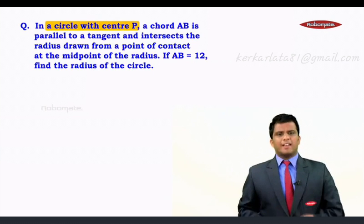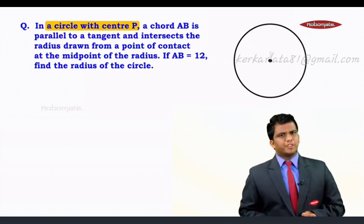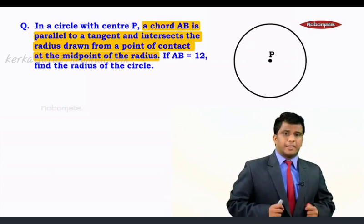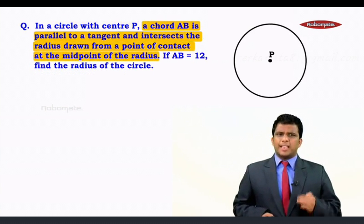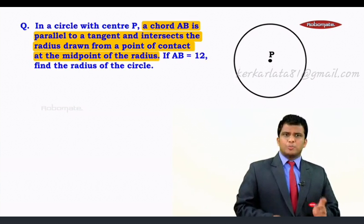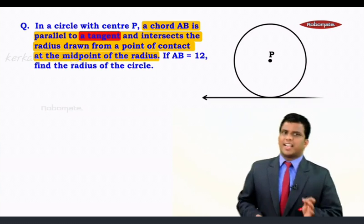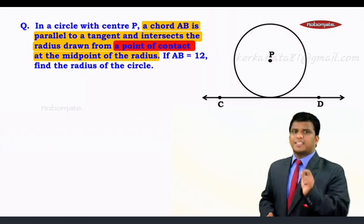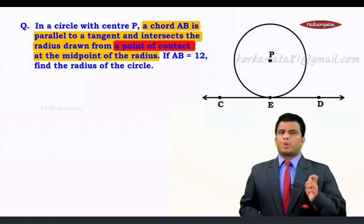Now we need to have a circle with center P for sure. And here we need to have a special segment which is the chord and whose name is AB. But this chord AB has got certain prerequisites. The chord AB has to be parallel to the tangent. So let's have a tangent here. Line CD is a tangent and the point of contact which is specified in the question, we will take it as point E.